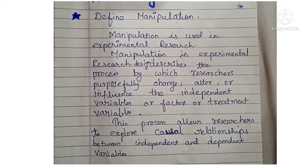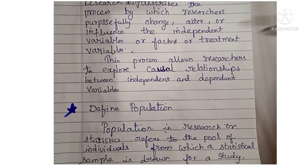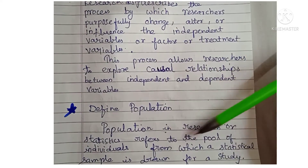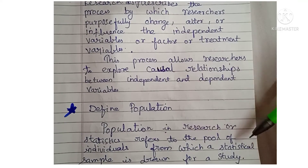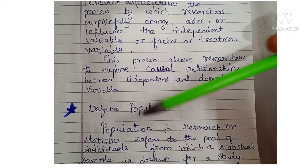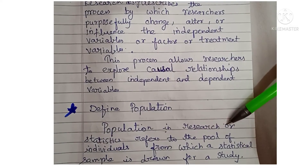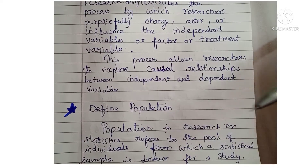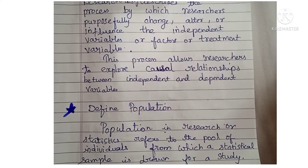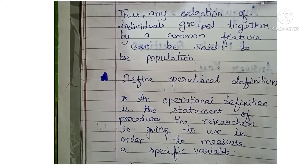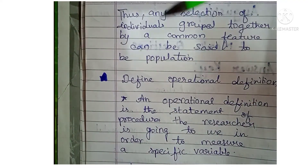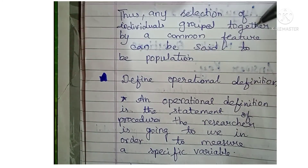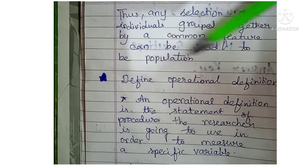The next question is: Define Population. Population in research or statistics refers to the pool of individuals from which a statistical sample is drawn for a study. Any selection of individuals grouped together by a common feature can be said to be a population.